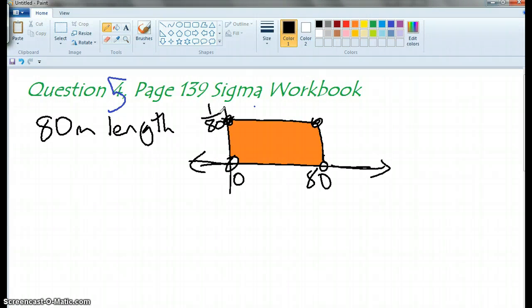Suppose the random variable X represents the distance of the fault from one particular end of the cable. Write down the probability density function. So we've got f of x equals two possible things, one over 80 or 0, and that's where x is between 0 and 80, and that's everywhere else. Okay, so that's A.